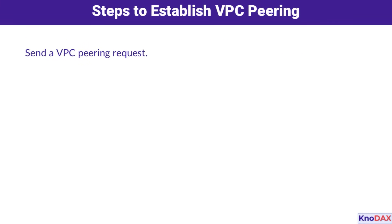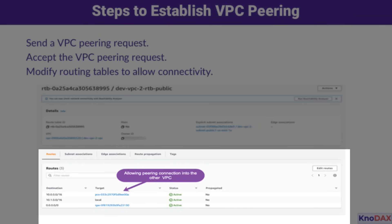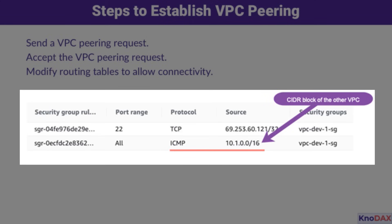Let's look into how to establish VPC peering. In the first step, a peering request is sent. Then in the second step, the request is accepted. In the third and final step, modify the route table of the subnet to allow the peering connection in which you have the launched EC2 instances. And don't forget — security groups must allow inbound ICMP for testing, like pinging, and routing tables in the subnets with EC2 instances must use the new peering connection.